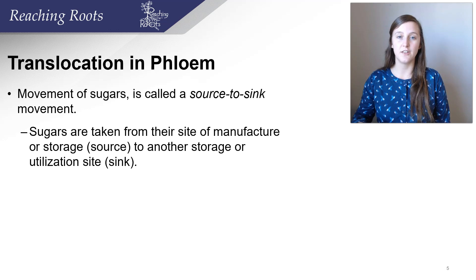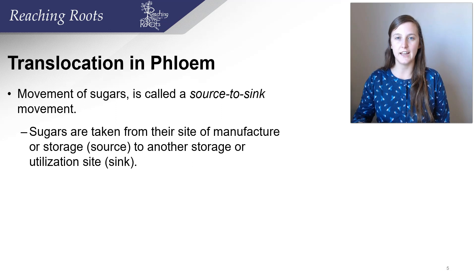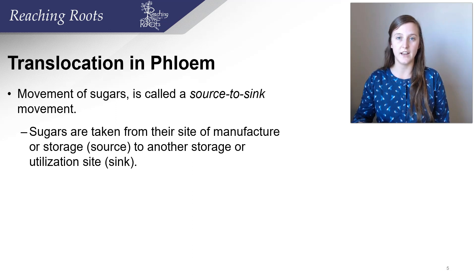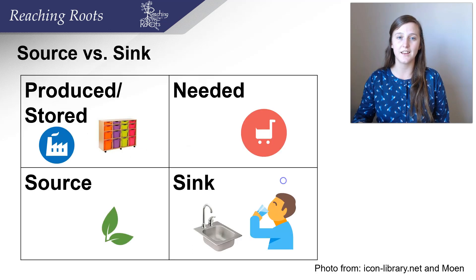Translocation of sugars occurs in the phloem, and it's called source-to-sink movement. Sugars are taken from their site of manufacturing, which is the source, or where they're being stored, also called the source, to areas where they need to be used. Those areas where the sugars are being used are called a sink.